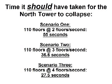In Scenario 2, had 3 floors failed each second, the whole tower should have taken 36.6 seconds to collapse. In Scenario 3, had 4 floors failed each second, the whole tower would have taken 27.5 seconds. Thus, there are differences of between 17.5 and 45 seconds from the actual collapse time and what a true structural failure should have taken. So the question remains: why did the North Tower go into complete freefall, indicating simultaneous failure of all structural components, including ones thousands of feet from the airplane's impact point?